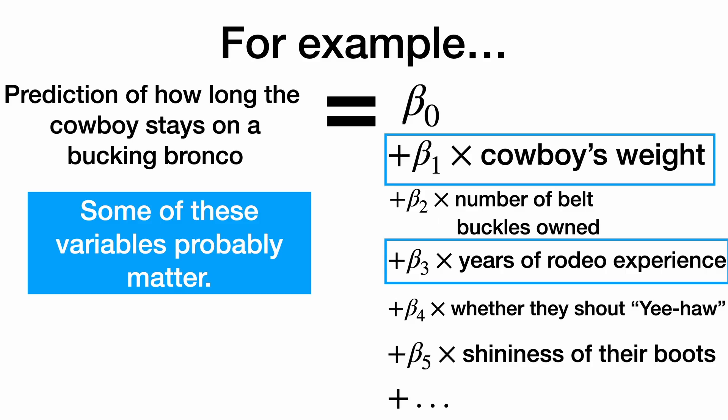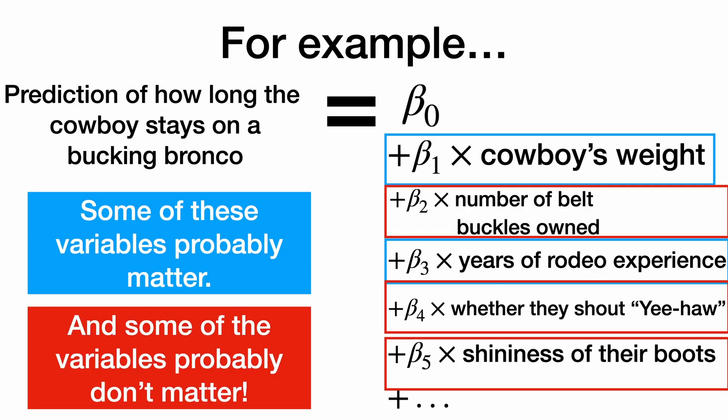For example, some of the variables, like the cowboy's weight and his years of rodeo experience, probably matter quite a bit for how long he can stay on his bucking bronco. But the number of belt buckles owned, whether they shout yee-haw! and the shininess of their boots, well, they may make him a respectable cowboy. They might not directly correlate to how good he is at staying on that bronco.